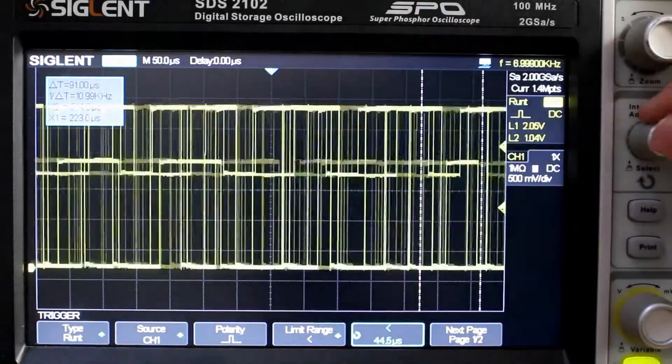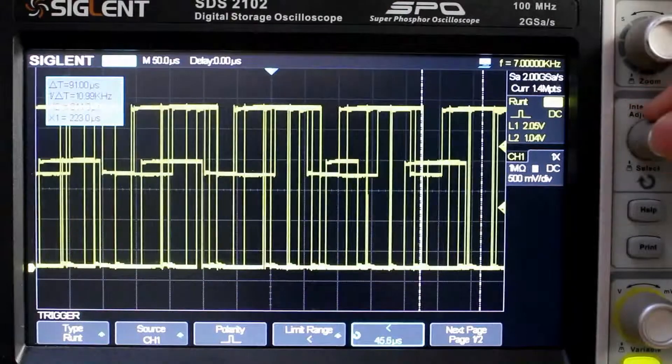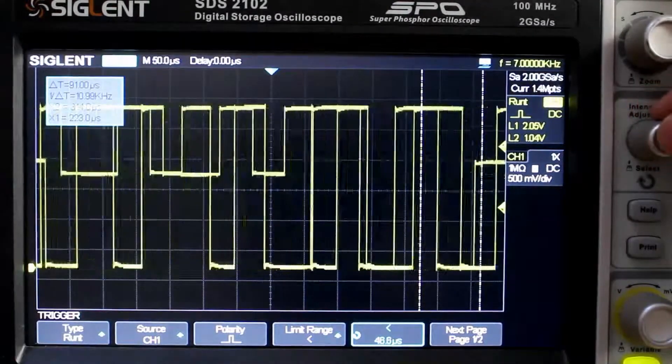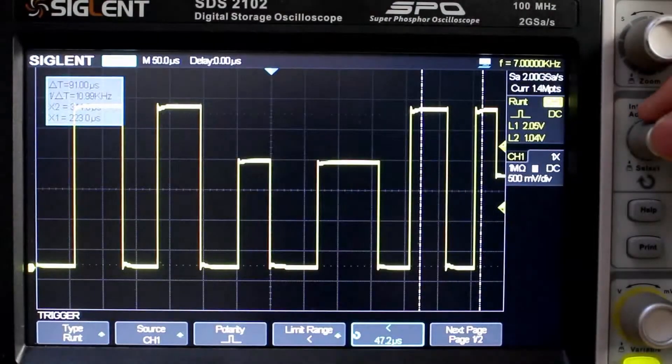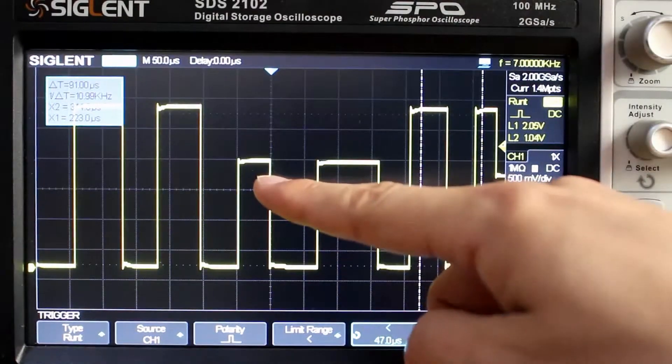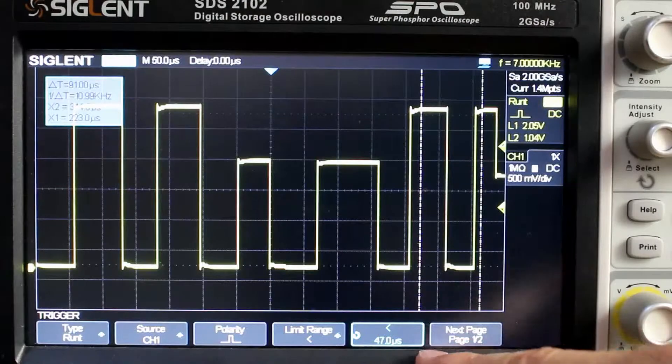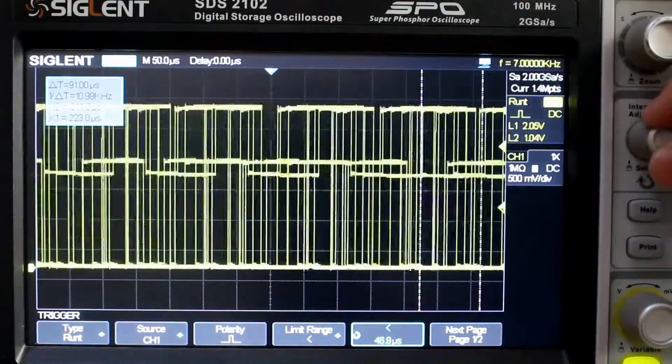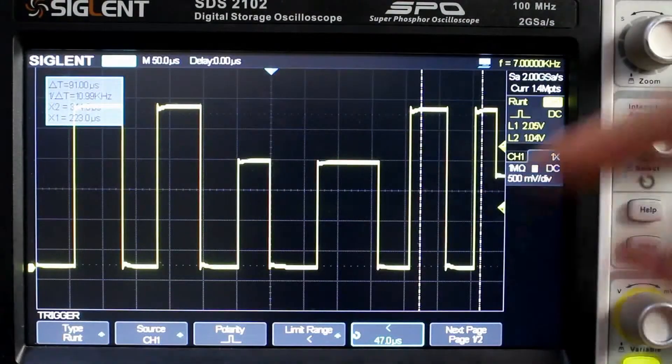And since we have it set to less than our limit range, it'll trigger on the shorter pulse. And there we have it. Okay, so 47, and I think if we go down from 47 just a bit, we should be untriggered. Yep, okay, so 47 is right about where it's at.